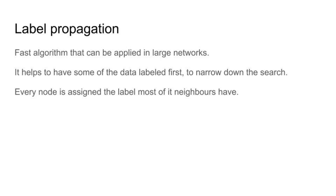One last community detection algorithm is the label propagation algorithm. This is a very fast algorithm and can therefore be applied to very large networks. The caveat is that it has some stochastic procedures that mean it does not return a unique solution every time you run it. You start by assigning labels to nodes you think belong to different communities. The algorithm then assigns random labels to all other nodes, and reassigns those labels by majority vote: each node takes the label held by the majority of its neighbors. This runs for every node multiple times until the network converges.